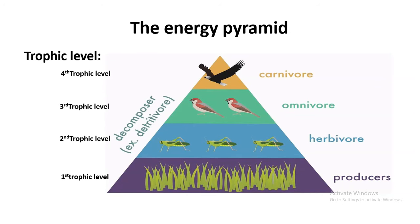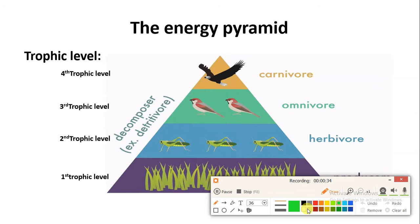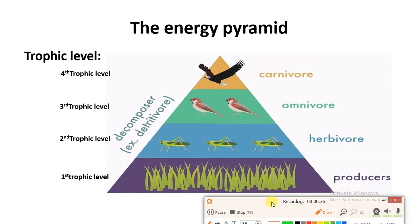This is the energy pyramid. In this pyramid, you can see at the basal region there is the presence of plants, which we call the producers. These are the producers which can convert the sun's energy into food form. So the energy is stored in the form of food.